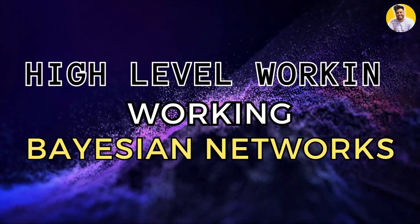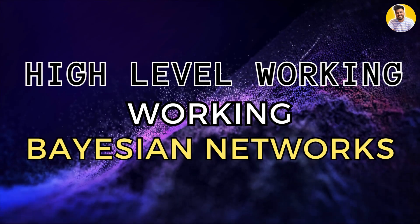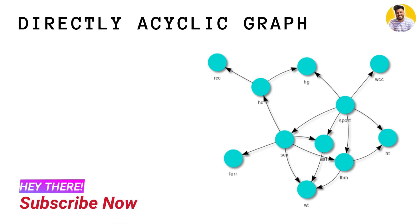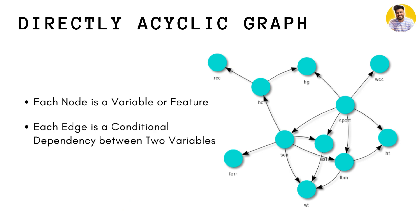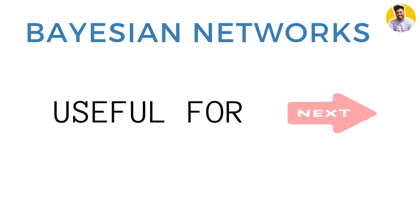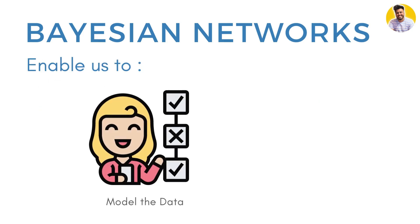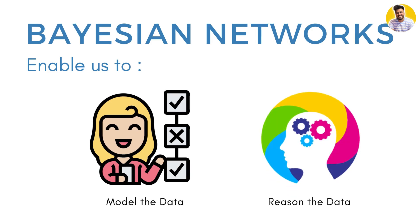At a very high level, a Bayesian network is a directed acyclic graph that represents a set of variables and their conditional dependencies. Each node in the graph represents a variable, and each edge represents a conditional dependency between two variables. Bayesian networks are particularly useful when dealing with complex, uncertain, and incomplete data. They enable us to model and reason about uncertain knowledge in a formal and quantitative way.